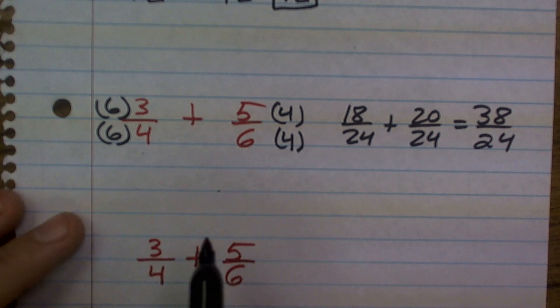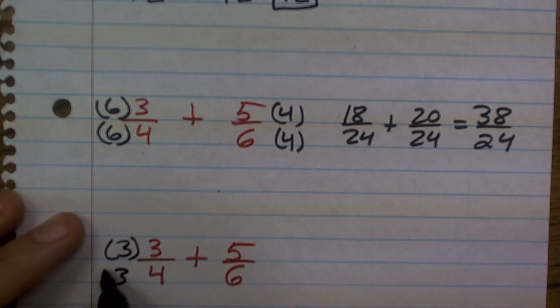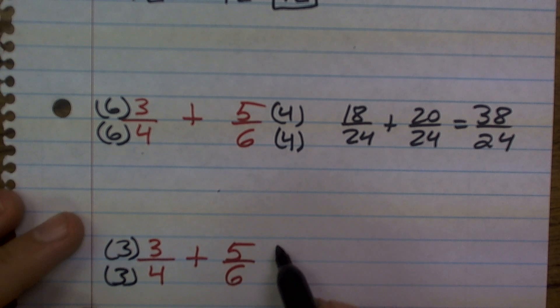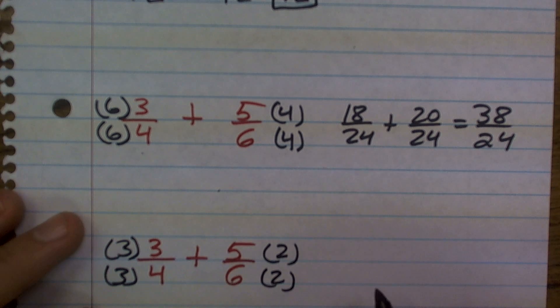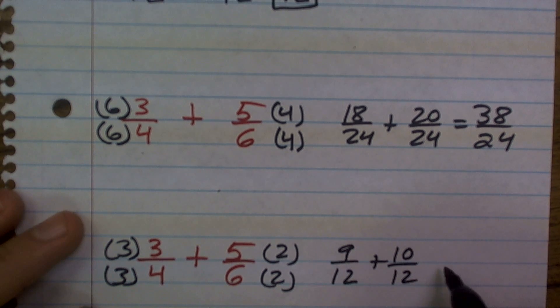So to get into 12, I need to multiply this by 3 over 3. And to get 6 to be 12, I need to multiply by 2 over 2. Therefore, when doing this, I now get 9 over 12 plus 10 over 12,